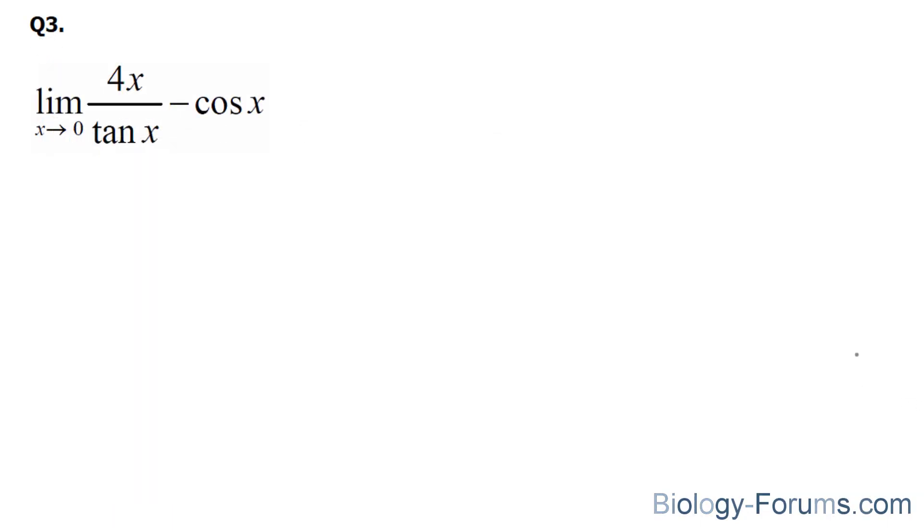Find the limit as x approaches 0 for this function. Now there's two routes you can take. You can find a common denominator for these two separate terms, and then subsequently use L'Hopital's rule, or remember that this limit can be applied to this function and this function. And I'll take that route. The limit as x approaches 0 for 4x over tangent x, and the limit as x approaches 0 for cosine.